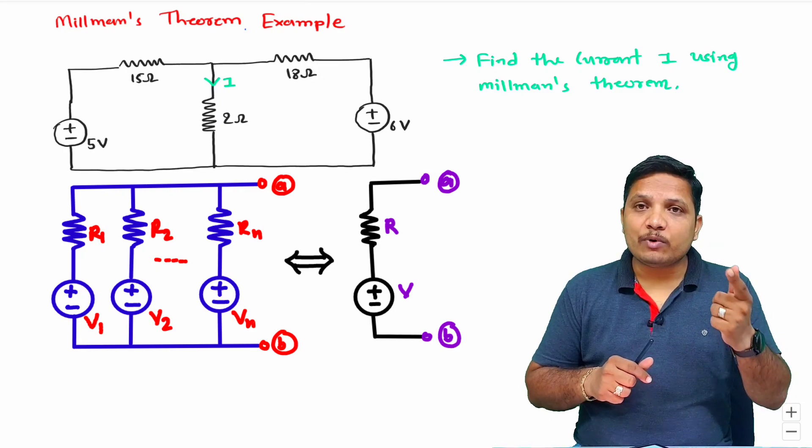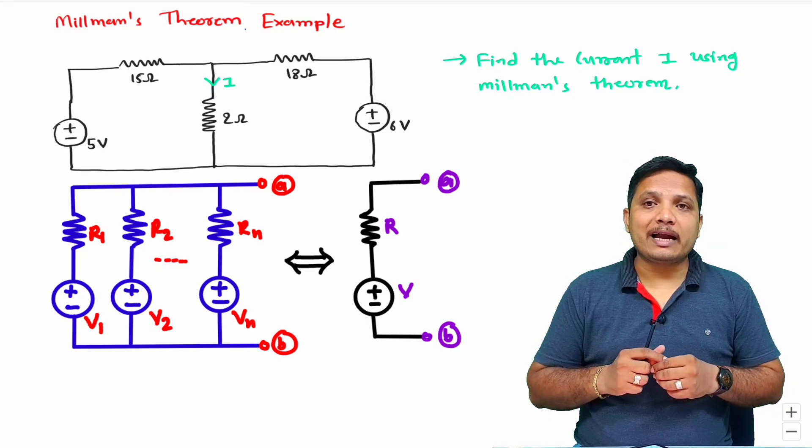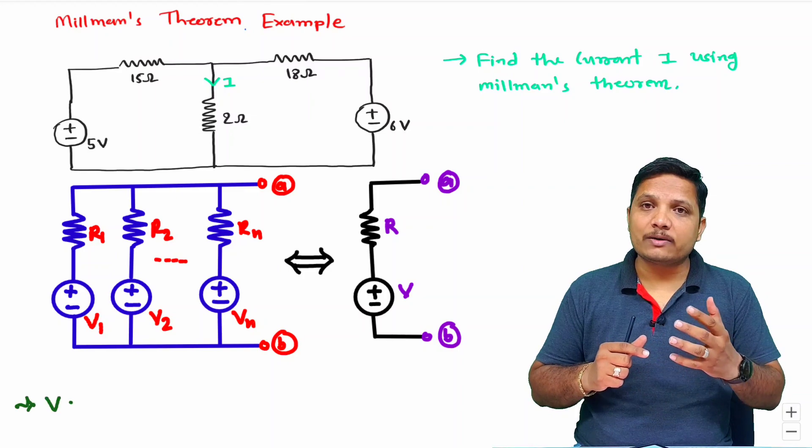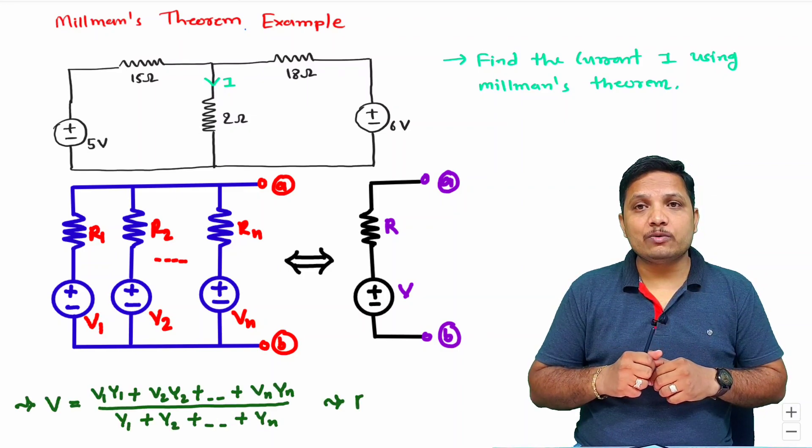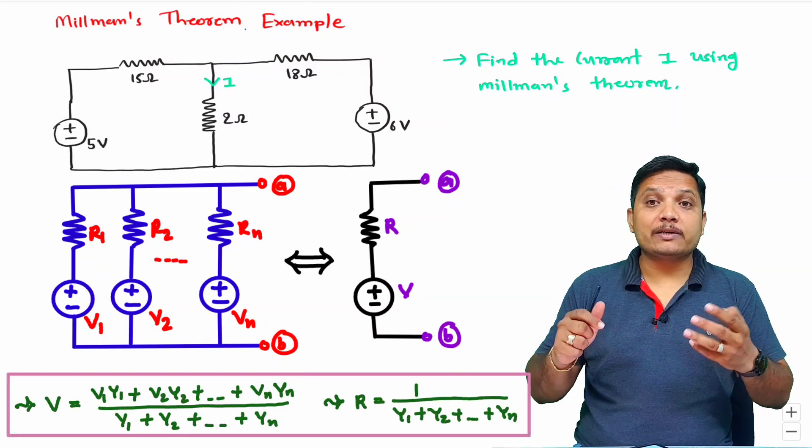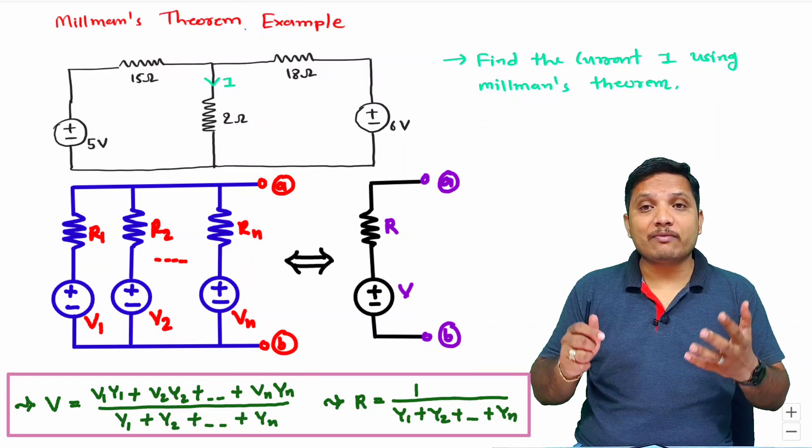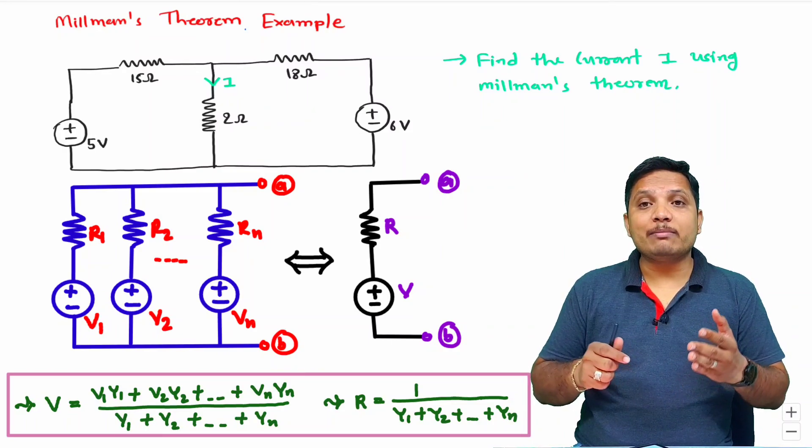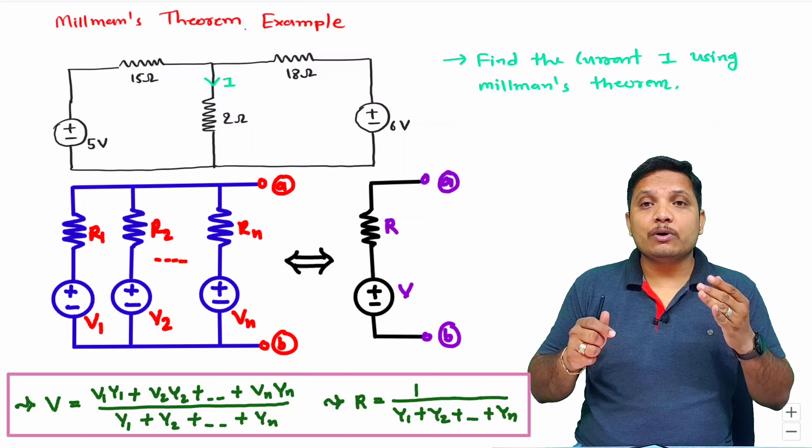To identify that voltage, the basic formula that we calculated is V equals V1Y1 plus V2Y2 up to VnYn divided by Y1 plus Y2 plus up to Yn.